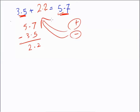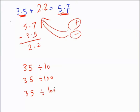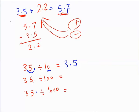Now we study dividing by 10, 100, and 1000. For example: 35 ÷ 10, 35 ÷ 100, 35 ÷ 1000. When dividing by 10 and multiples of 10, move the decimal point to the left. For ÷10, one zero means move one digit: 3.5. For ÷100, two zeros: 0.35. For ÷1000, three places — add a zero — so the answer is 0.035.